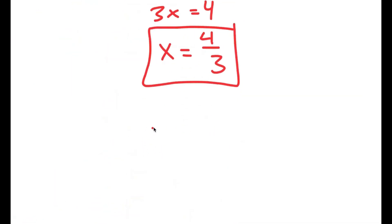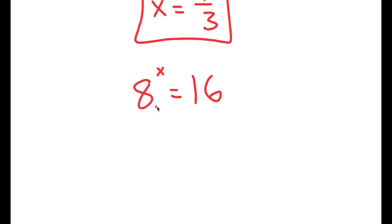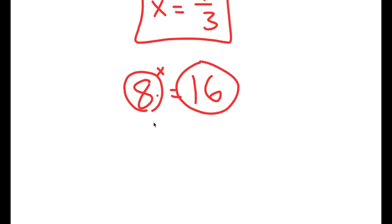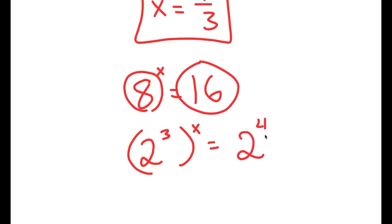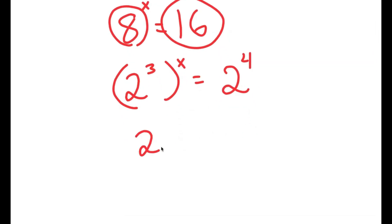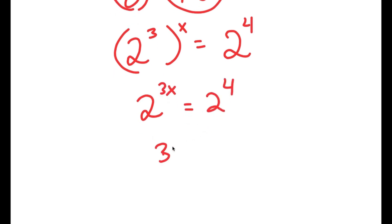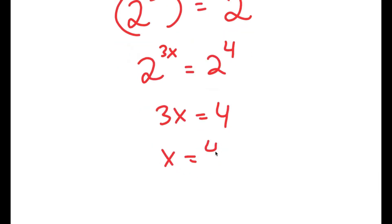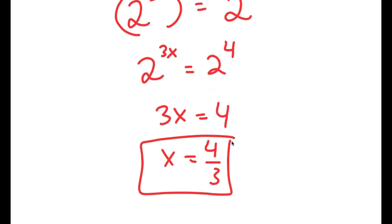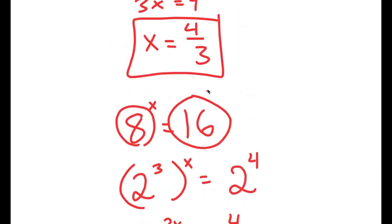There's actually another way to solve this problem. At the start, you can rewrite both sides in base 2. So 8 becomes 2 to the power of 3, giving 2 to the power of 3x, and 16 becomes 2 to the power of 4. This means 3x equals 4, and x equals 4 over 3. This is a much simpler method of solving this problem.